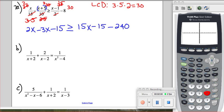Now let's clean up some more. Combine like terms: 2x minus 3x is negative x, minus 15 is greater than or equal to 15x. Combine these two and we get negative 255. So let's add the x to both sides. This way we'll get 16x, so that's a positive number.